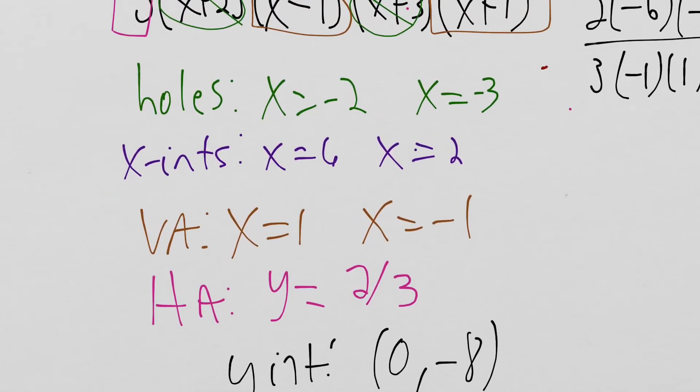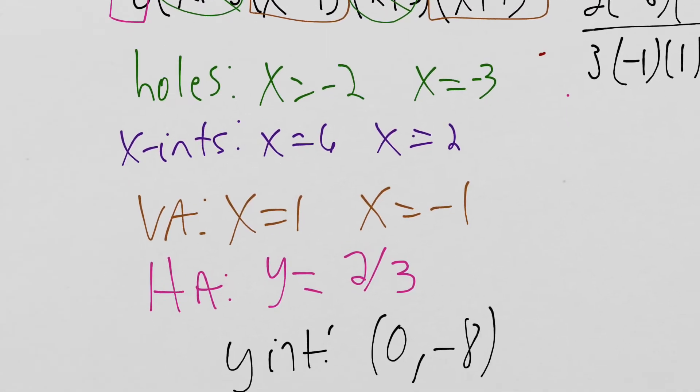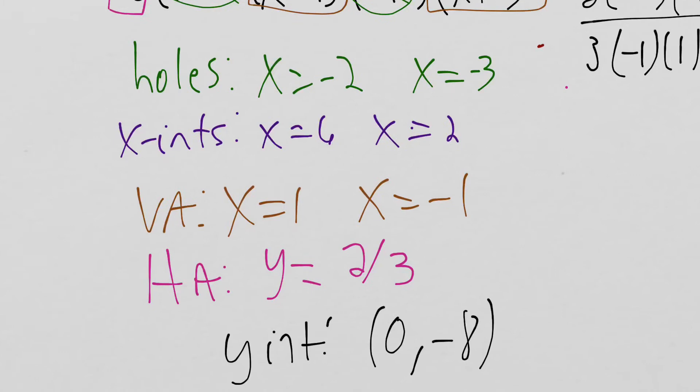So now we're going to graph this based on these key features that we have. So we need to put all the key features on a set of axes first, and then we'll be able to determine the shape. So let's start with the vertical asymptotes at 1 and negative 1. Just draw a big set of axes here. And we're just going to put vertical asymptotes at what we're going to call negative 1 and 1.